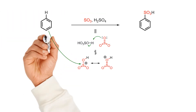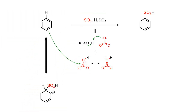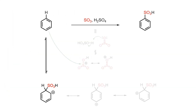In the rate-determining step, the benzene ring attacks the electrophile, which breaks the aromatic pi cloud and results in a sigma-complex carbocation. Delocalization of the electron deficiency is possible over much of the sigma-complex cycle, which explains why the carbocation is achievable in this mechanism.